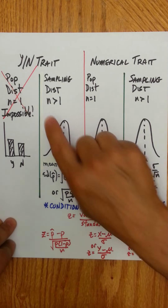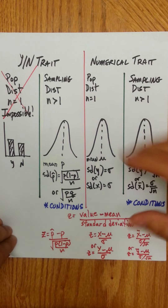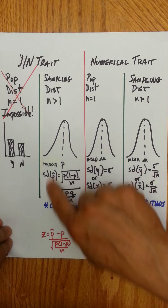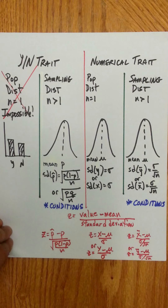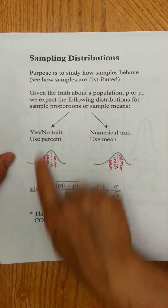So what we did instead is we had to have sample sizes greater than one. A sample proportion was essentially the number of people in a sample that had the trait, divided by the total number of people, or the sample size N. So we created sample proportions, and then we talked about the sampling distribution for a yes-no trait.